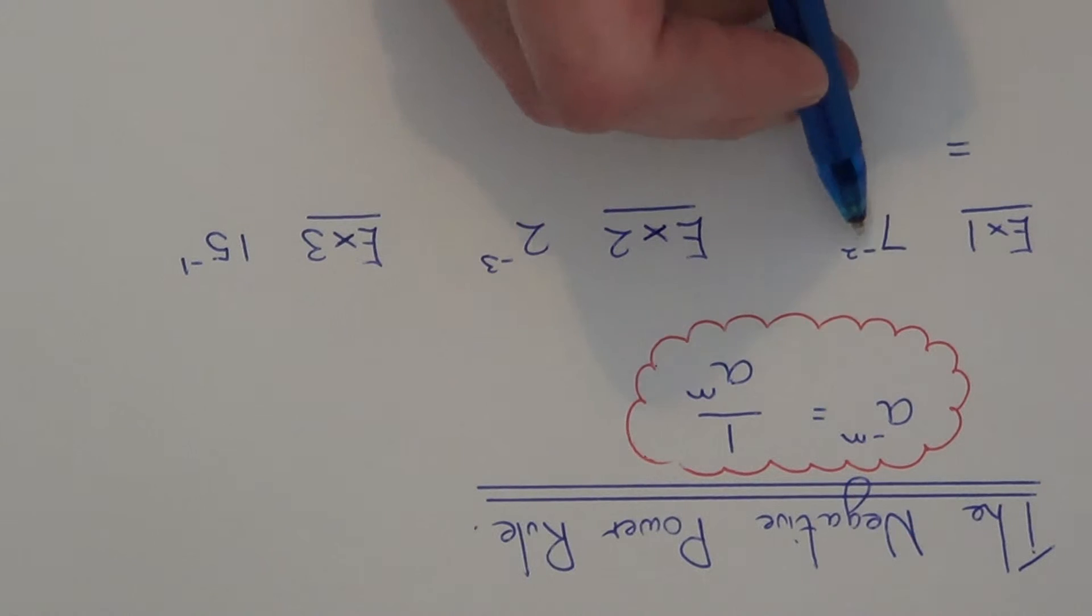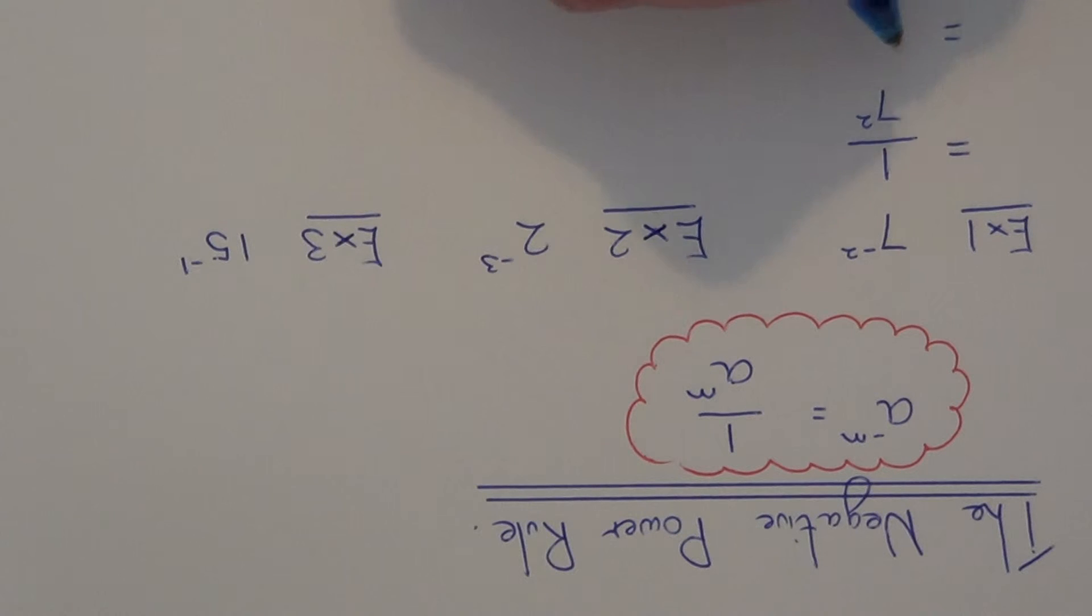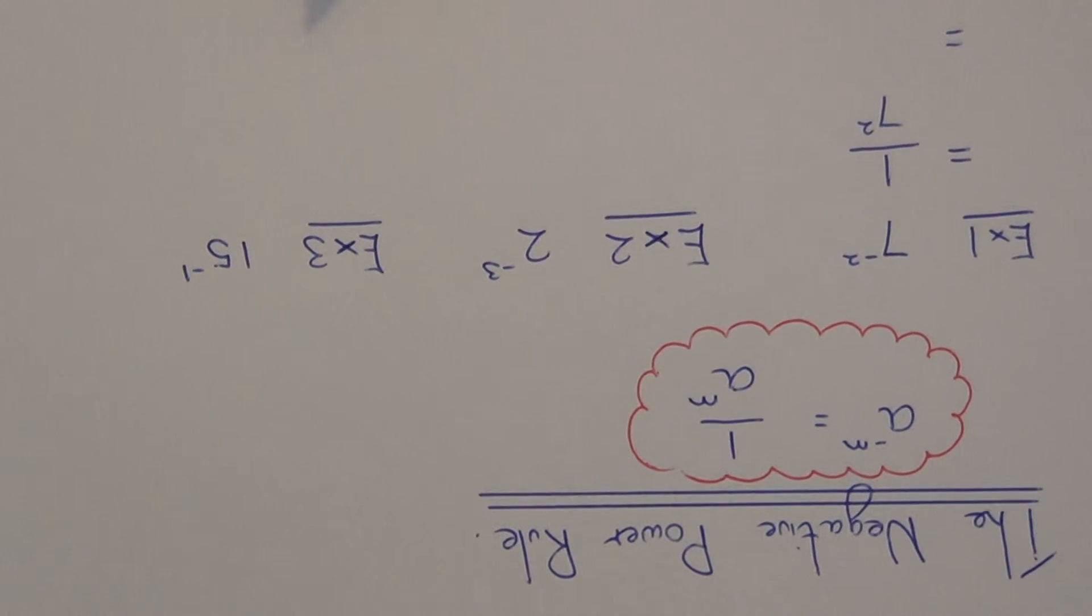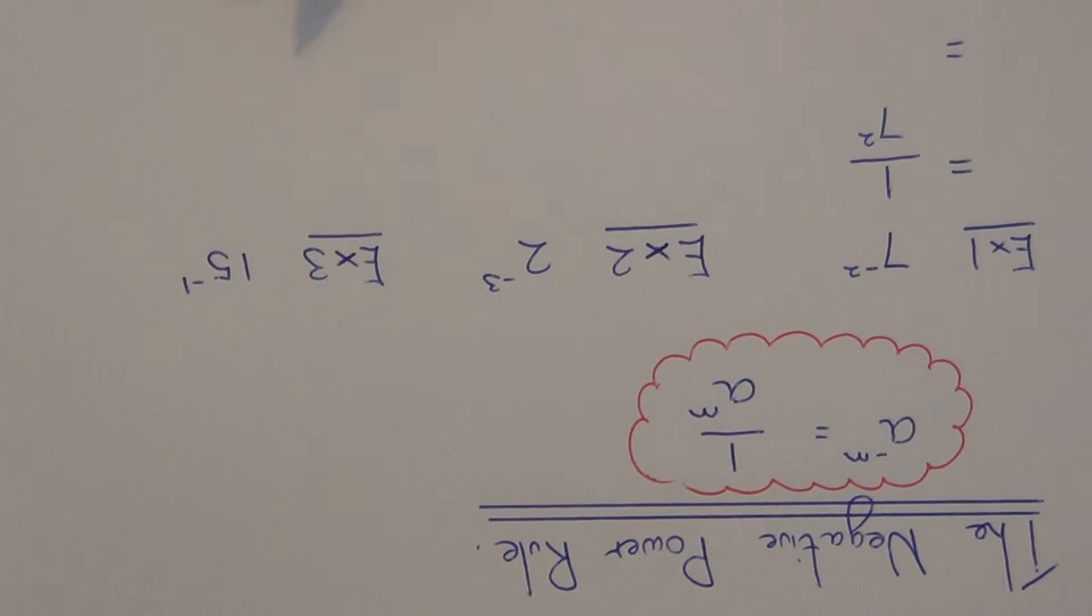Since it's negative power we know it goes to a fraction so we put one on the numerator of the fraction and we write 7 to the power of 2 on the denominator. All we need to do now is just work out 7 to the power of 2. So 7 to the power of 2 is 49. So our final answer is 1 over 49.